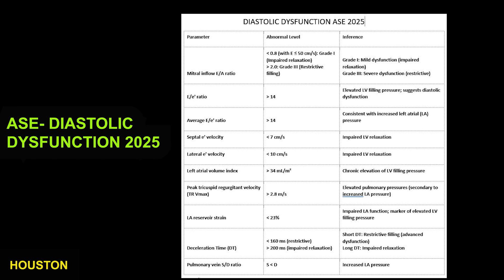And finally, the pulmonary vein systolic-diastolic ratio — where the systolic is less than the diastolic — suggests increased left atrial pressure. There you have it, ladies and gentlemen, the ASE 2025 diastolic dysfunction criteria. Thank you.